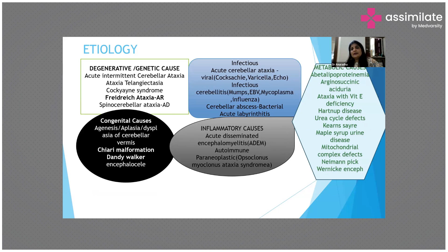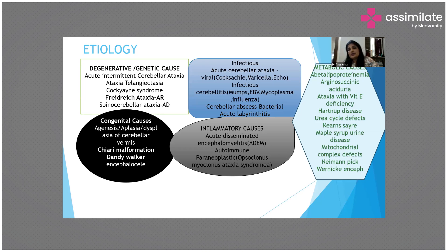The most common type, as you can see, is post-infective. Post-infective causes are seen in day-to-day practice. A child with a recent history of chickenpox comes to us with a gait problem and coordination problem — that is acute cerebellar ataxia. It may also occur after Coxsackie infection, echo infection, or isolated inflammation of the cerebellum due to Mumps virus, Epstein-Barr virus, Mycoplasma influenzae, and others. Sometimes there is a bacterial abscess in the cerebellum due to Staphylococcus, or sometimes infection of the labyrinth.